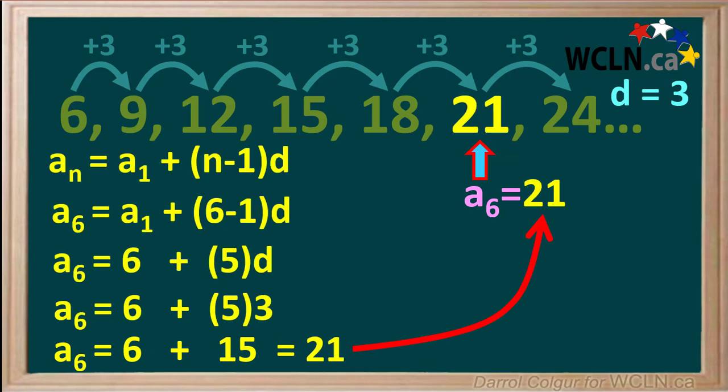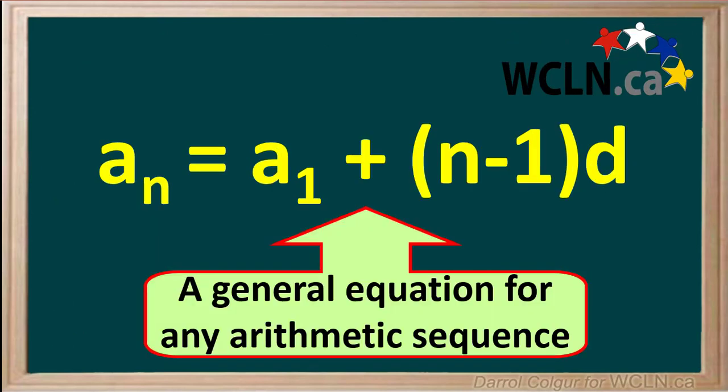So using the equation has given us the correct value for term 6, which is 21. an equals a1 plus (n minus 1)d is a very useful equation, and it can be used for many questions involving arithmetic sequences.